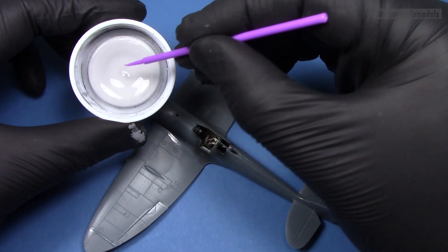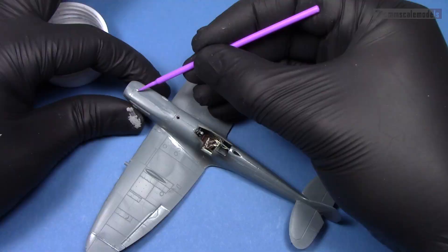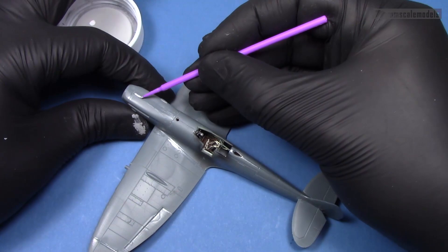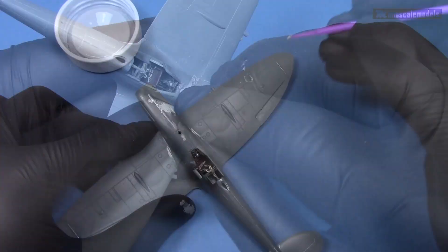With all the major assembly completed, I went ahead and applied some Mr. Surfacer 500 in the gaps. I chose to use this primer as a filler because I think it performs better than regular filler when we have very fine gaps to fill.